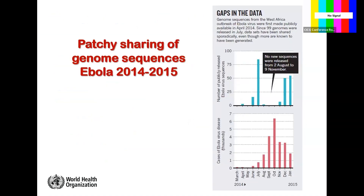By contrast, while sequence sharing seemed to work reasonably well in COVID-19 — and most stakeholders would consider it a success — this is not necessarily the case for other potentially pandemic or serious outbreak pathogens. In the Ebola public health emergency of international concern in 2014, there was a point during the emergency, at the actual peak of cases, when no Ebola sequences were being shared internationally.